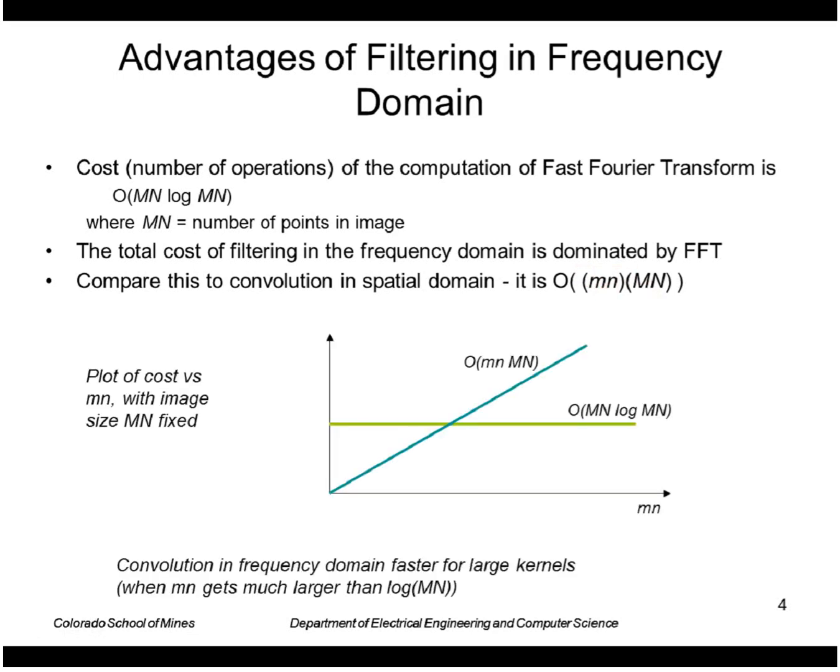If we fix the image size capital M capital N and look at how the cost increases with increasing filter size, in the spatial domain the convolution increases linearly with the size of the filter. Whereas the cost in the frequency domain is fixed, it doesn't matter how big the filter is. For large kernels, convolution in the frequency domain is faster than doing it in the spatial domain.